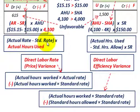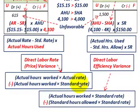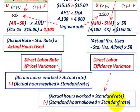Expanding on definitions: the direct labor rate or price variance = (Actual Hours Worked × Actual Rate) − (Actual Hours Worked × Standard Rate). The direct labor efficiency variance = (Actual Hours Worked × Standard Rate) − (Standard Hours Allowed × Standard Rate). That's the distinction between direct labor rate/price variances and direct labor efficiency variances.